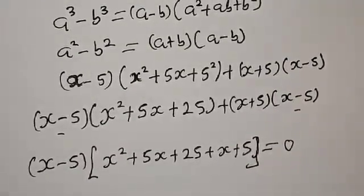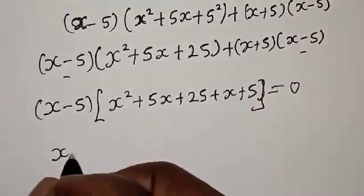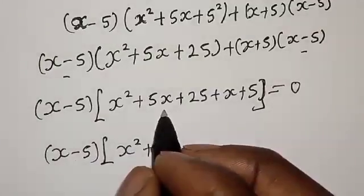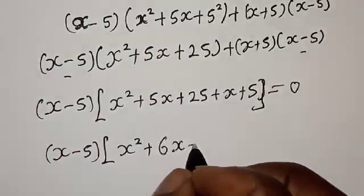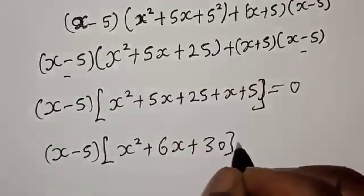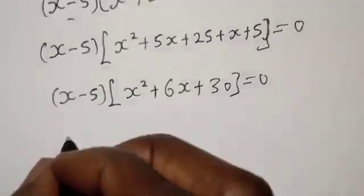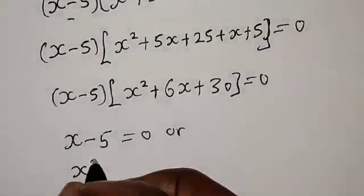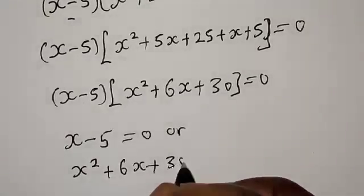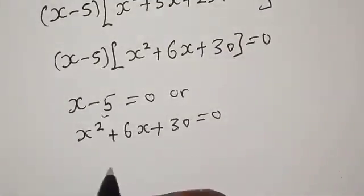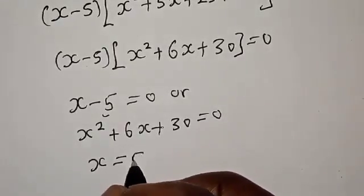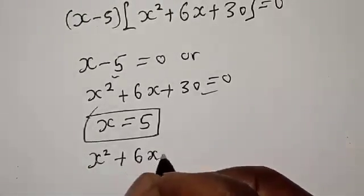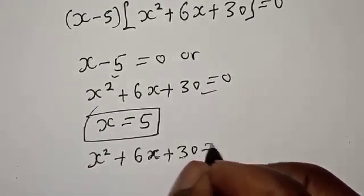We have s minus 5 times s squared plus 5s plus s, which gives 6s, plus 25 plus 5, which gives 30, equal to 0. So s minus 5 times s squared plus 6s plus 30 equals 0. Then we have two cases: s minus 5 equals 0, or s squared plus 6s plus 30 equals 0. From the first case, s equals 5, which is the first root.